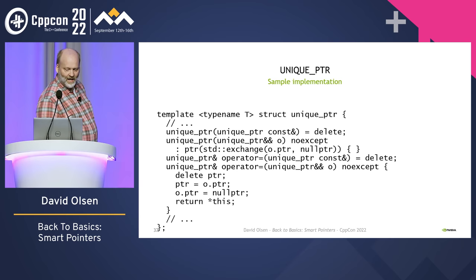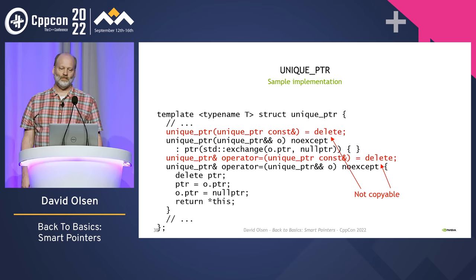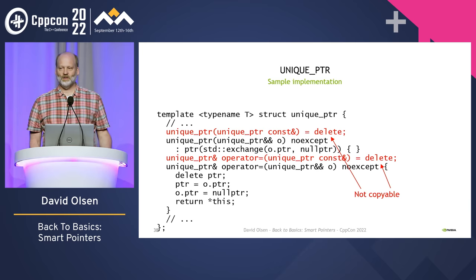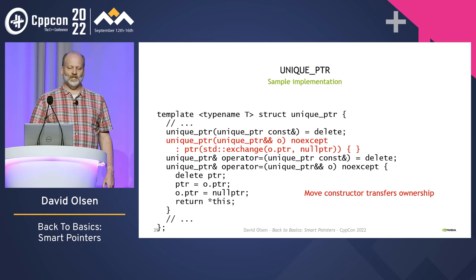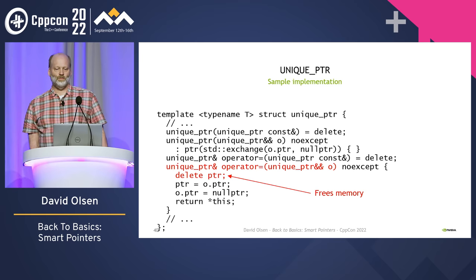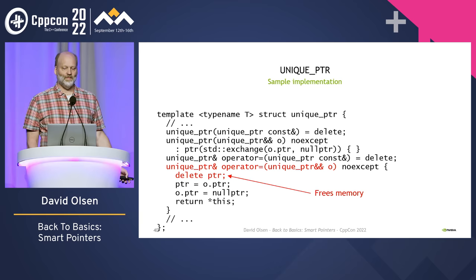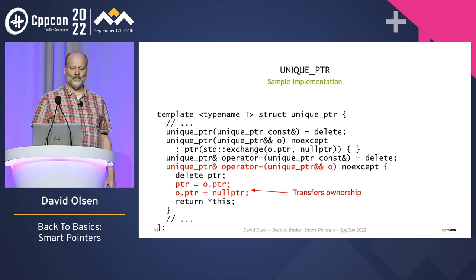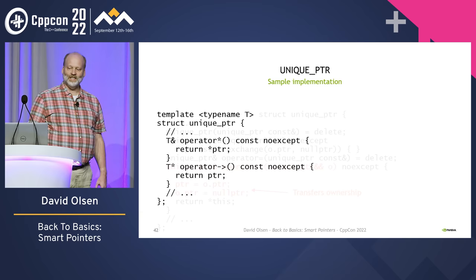The copy constructor and copy assignment operator are deleted functions because unique_ptr is not copyable. The move constructor transfers ownership from the other unique_ptr object — when done, the new object owns whatever the other used to own, and the other object is empty and doesn't own anything. The move assignment operator first releases whatever memory is currently owned, because it is taking ownership of some other memory and must delete the old memory, then it transfers ownership from the other unique_ptr object, leaving the other in an empty state.